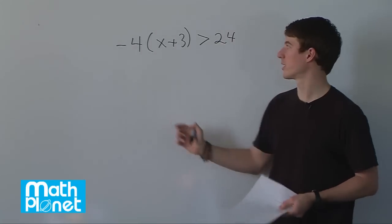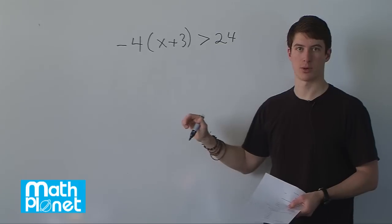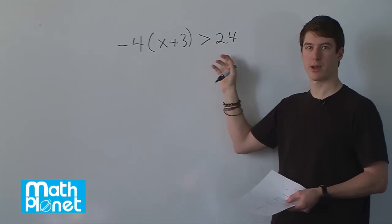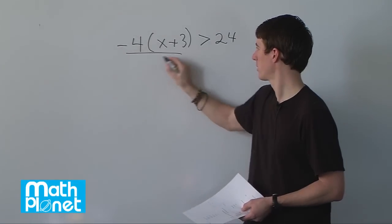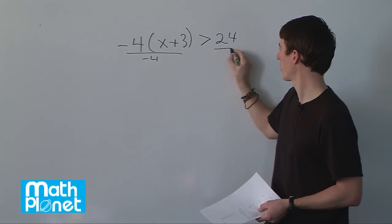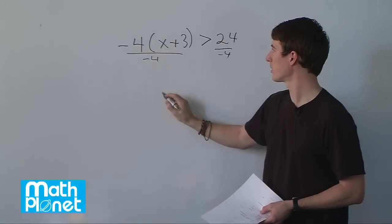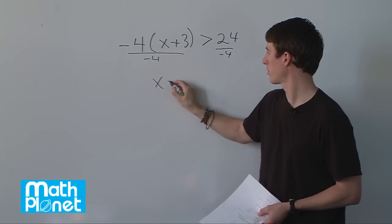So the first thing we want to do here is get rid of this negative 4. We could expand through or we could divide by negative 4, so let's do the latter. Let's divide by negative 4. From both sides, divide by negative 4, then I'll get rid of this here, and we just have x plus 3.